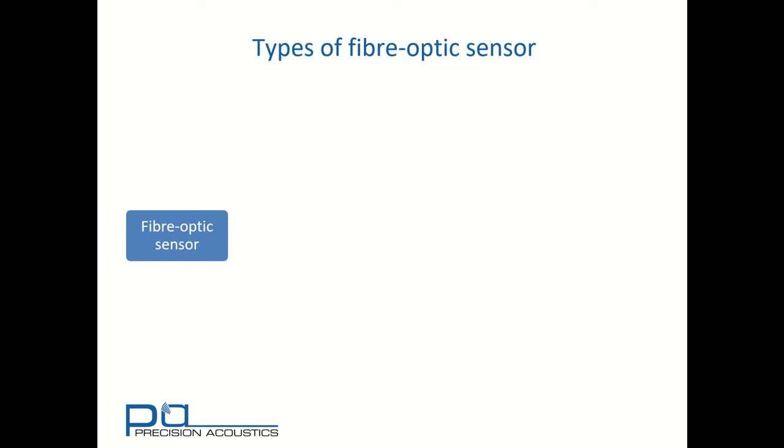Fiber optic sensors tend to fall into two broad categories: those with intrinsic sensing mechanisms, where the sensor is built into the body of the fiber, and extrinsic sensors, which are located on the tip or the end of the optical fiber.